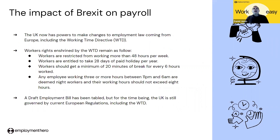Brexit did have a big impact on payroll within the UK. The UK now has the power to make changes to employment law that previously came from Europe, including the Working Time Directive. Workers' rights enshrined in the Working Time Directive currently remain as follows: workers are restricted to working no more than 48 hours per week; workers are entitled to 28 days paid holiday per year; workers should get a minimum of 20 minutes break for every six hours worked; and employees working three or more hours between 11pm and 6am are deemed to be night workers and their working hours should not exceed eight hours. A draft employment bill has been tabled but for the time being the UK is still governed under European regulations including the Working Time Directive.